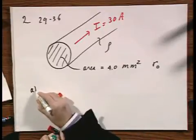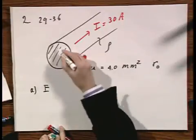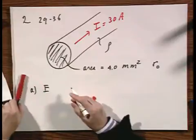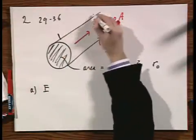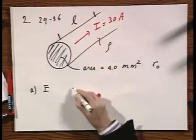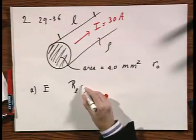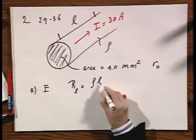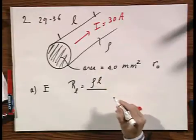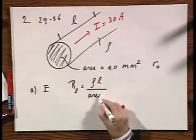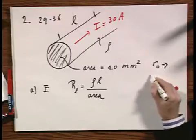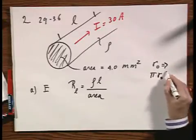The first question you're being asked: what is the electric field inside the wire itself? Let us take a random section of length L. Then the resistance R of length L equals ρ times L divided by the cross-sectional area, which would then be, if you accept my r₀, it would be πr₀².